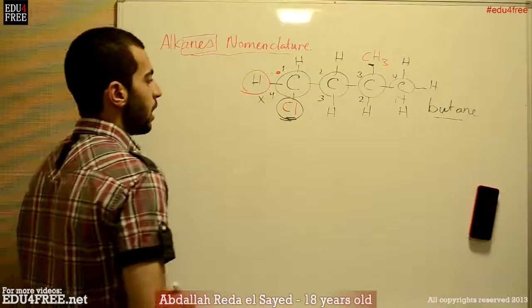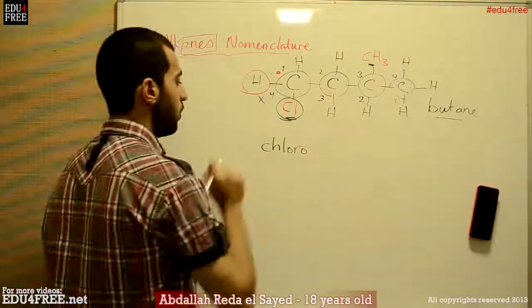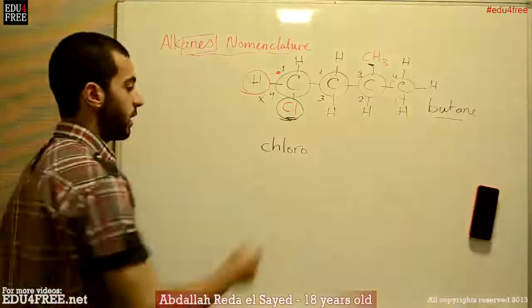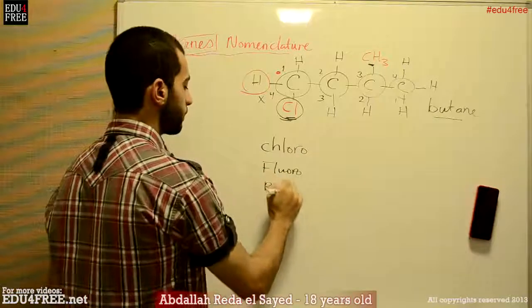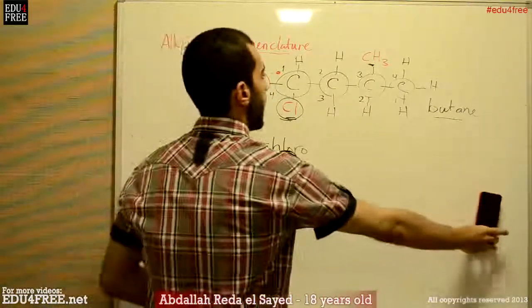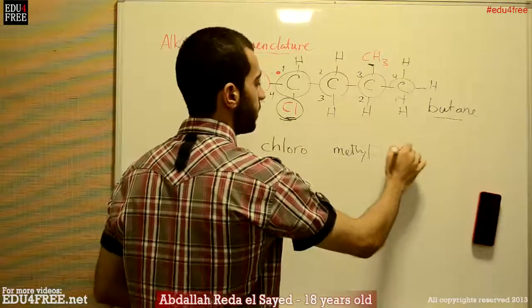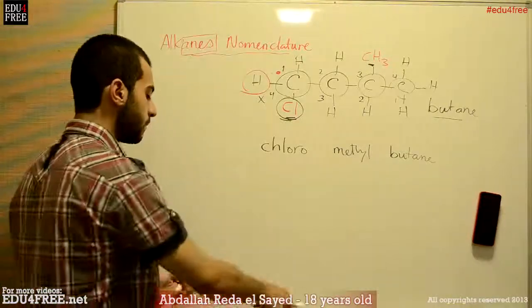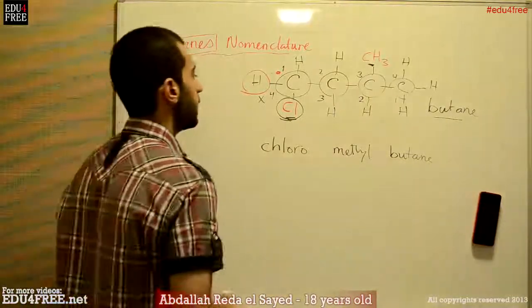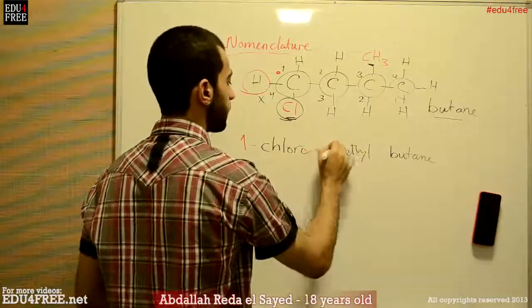What we do is type 'chloro' — the halogens are named like that when they are attached to the hydrocarbon chain: chloro, bromo, and iodo. So here we have chloro. And we have a methyl group. And we have butane. Then we arrange the substituents alphabetically, and C comes before M, so this is correct. We put the proper numbers with dashes: 1-chloro-3-methylbutane. This is basically how you name an alkane.